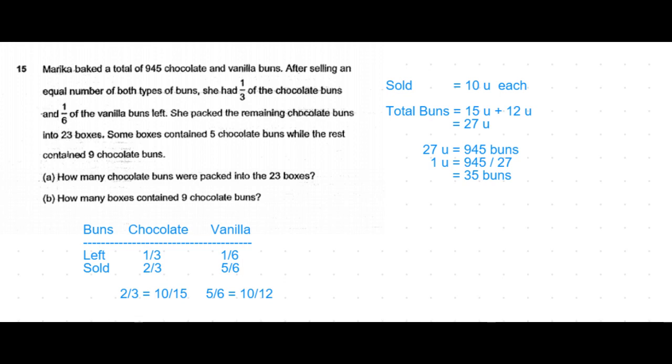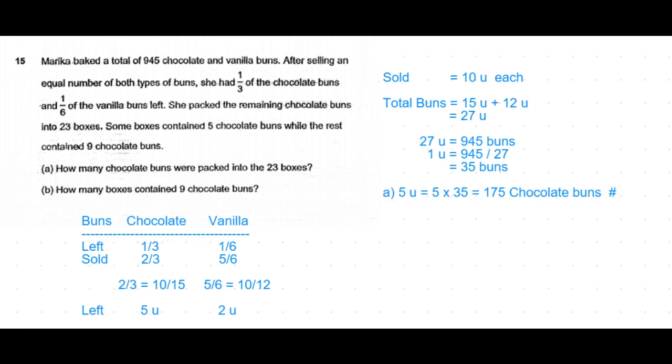Now answering the first part of the question: How many chocolate buns were packed into the 23 boxes? Which means how many chocolate buns were left? Five units of the buns were left. Five units is equal to five times 35, which is 175 chocolate buns. That's the answer for part (a) of the question.